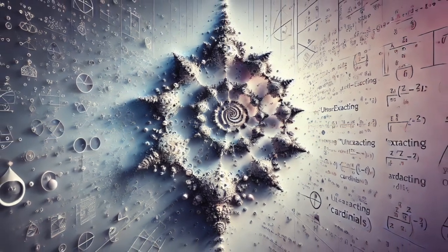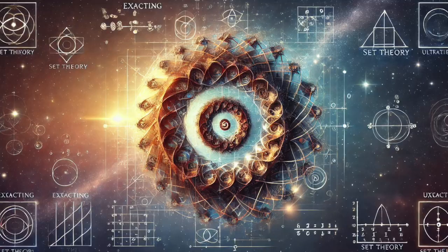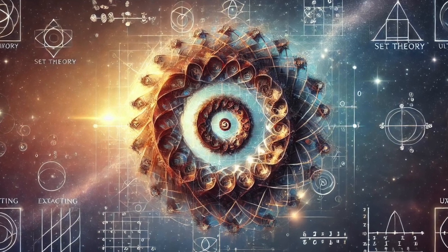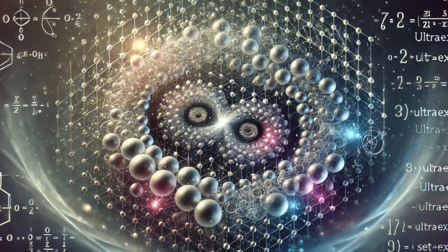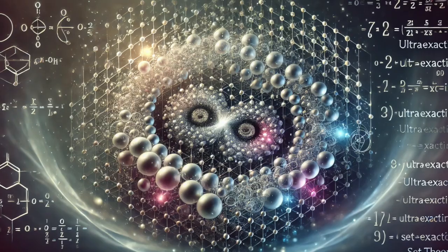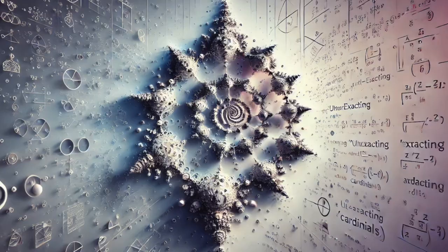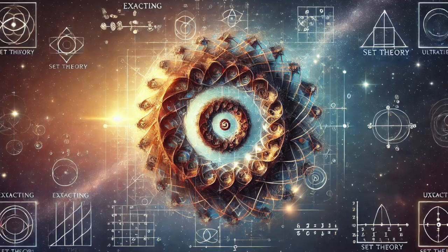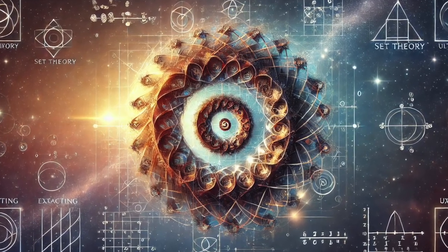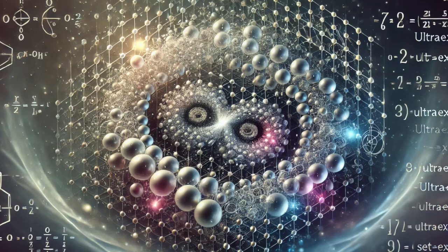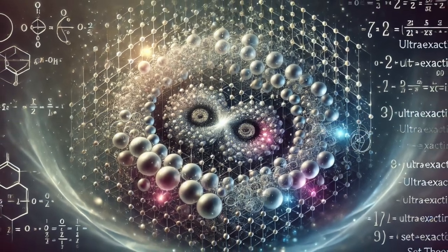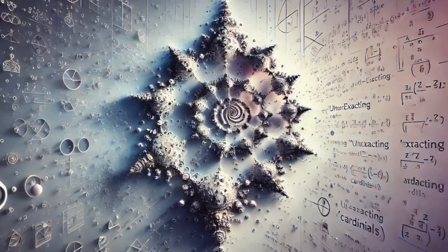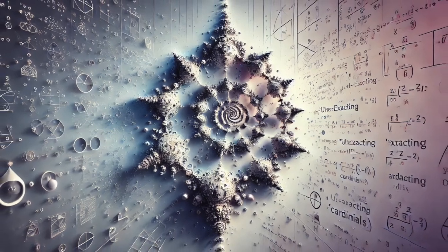This self-similarity is tied to this concept we call structural reflection in set theory. The idea is that patterns or properties of the entire universe of sets are reflected in these smaller parts. What makes exacting and ultra-exacting cardinals so special is they have this self-referentiality much more than anything we've seen. These cardinals are showing us that infinity isn't just bigger than we thought—it's more intricate, self-reflective in ways we never really considered.